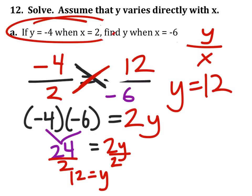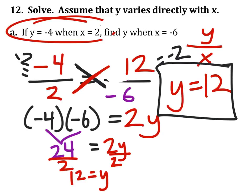And if we check that, 12 divided by negative 6 equals negative 2, and negative 4 divided by 2 also is negative 2. So, as it turns out, y is actually 12.